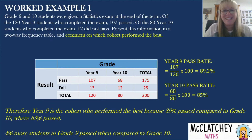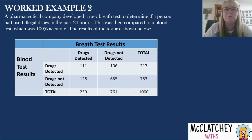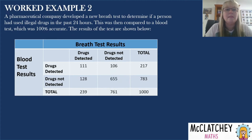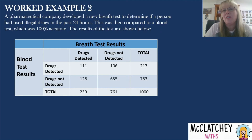Worked example two: a pharmaceutical company developed a new breath test to determine if a person has used illegal drugs in the past 24 hours. This will be compared to a blood test which we already know is 100% accurate. A breath test is likely preferred because it's easier to administer and gives instant results, whereas a blood test needs to be sent away for analysis. The results of both tests are compared in a table, with blood test results versus breath test results, showing drugs detected and not detected.